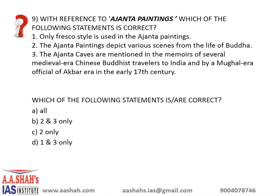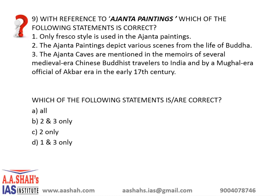With reference to Ajanta paintings, which statements are correct? First, only fresco style is used in Ajanta paintings. Second, the Ajanta paintings depict various scenes from the life of Buddha. Third, the Ajanta caves are mentioned in the memoirs of several medieval-era Chinese Buddhist travelers to India and by a Mughal-era official of Akbar's era in the early 17th century. The correct answer is B, 2 and 3 only. Both fresco and tempera styles are used in Ajanta paintings — fresco is made on wet plaster, while tempera is made on dry plaster.